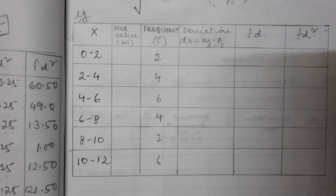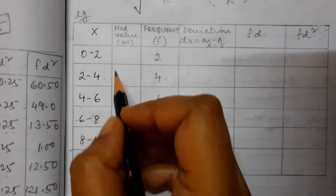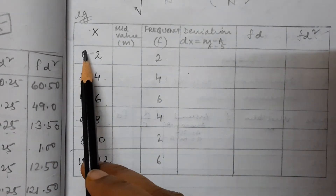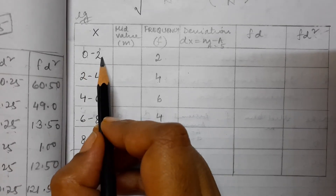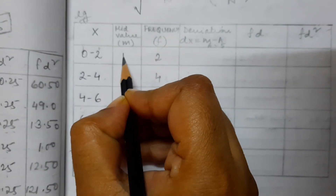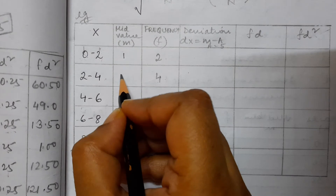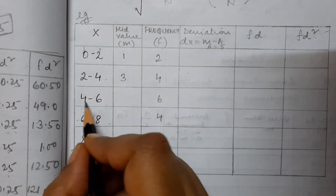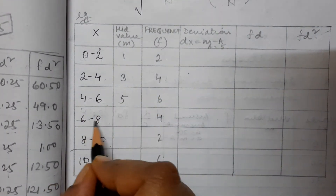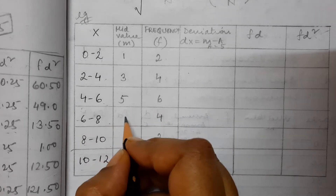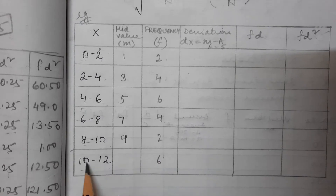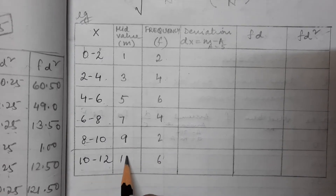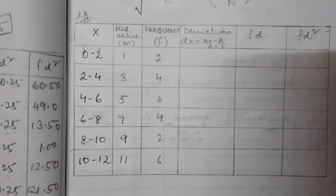Next, you have to calculate the mid values. Mid values means (lower limit + upper limit) / 2. So: (0+2)/2 = 1, (2+4)/2 = 3, (4+6)/2 = 5, (6+8)/2 = 7, (8+10)/2 = 9, (10+12)/2 = 11. So you have got the mid values: 1, 3, 5, 7, 9, 11.